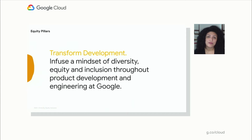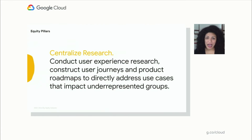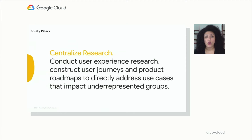We really have some lofty guideposts. The first one is we want to transform development — we want to infuse a mindset of diversity, equity, and inclusion throughout product development and engineering at Google. We have a specific theory of change about where to start. We also want to centralize research. We believe that ethical user experience research focused on constructing user journeys and product roadmaps that directly impact underrepresented or marginalized groups is our priority zero.